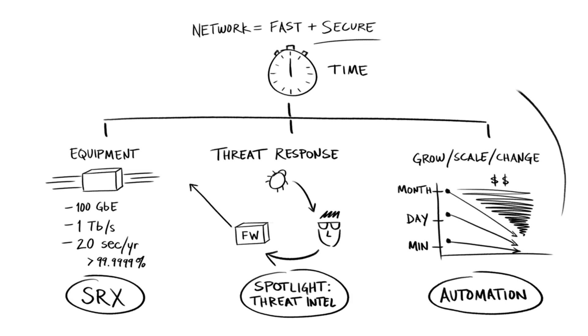That brings us back to the top, where we started this conversation. Networks are about moving packets. They need to be fast, and they have to be secure at the same time. You really can't separate the two. And that's why Juniper is in the security business. Juniper, networking, security, it's all about time.